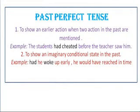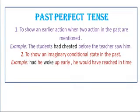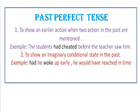Then we have past perfect tense. Perfect mein kya hamein show hota hai? It shows an earlier action when two actions in the past are mentioned. Present perfect tense mein hamne 'has' ka upyog kia tha; yahaan 'had' ka karte hain. Example: 'The students had cheated before the teacher saw them.' Ek aisa action jo ki complete ho raha hai pehle wale se.